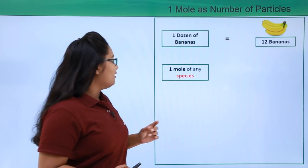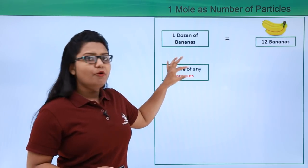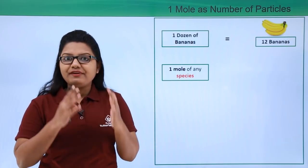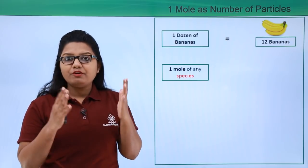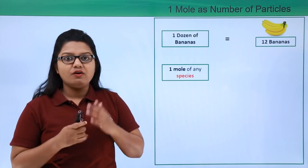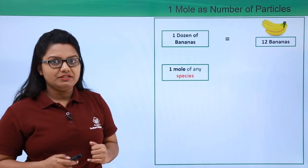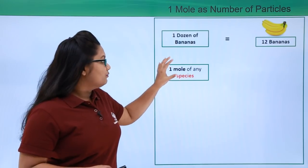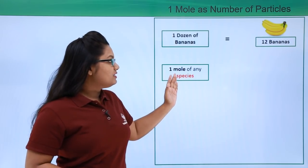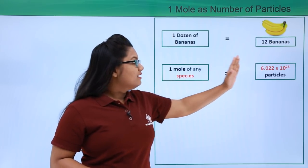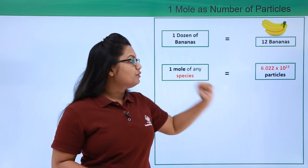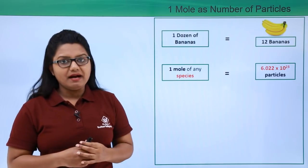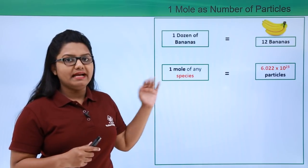In the same way, one mole of any species also represents a fixed number of particles of that particular species. That is, one mole of any species equals 6.022 × 10²³ particles of that species.